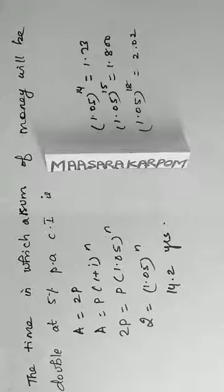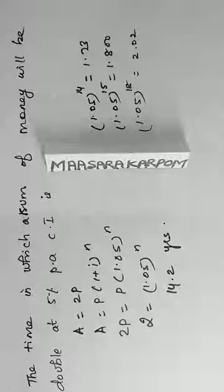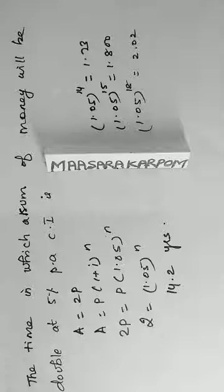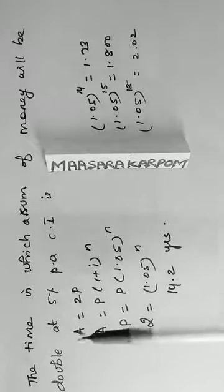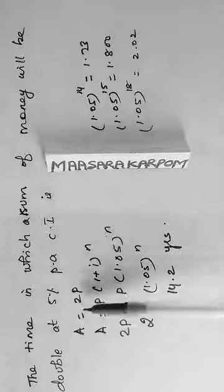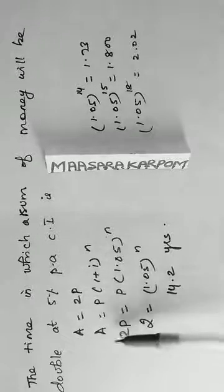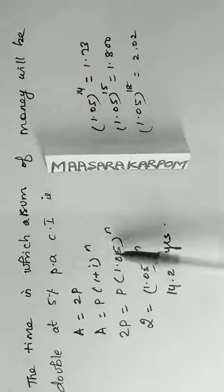Next, question number 3. The time in which a sum of money will be double at 5% per annum compound interest is. So, compound interest formula, amount is 2p, principle is p, it doubles. Amount is equal to principle into 1 plus 5 whole power n.